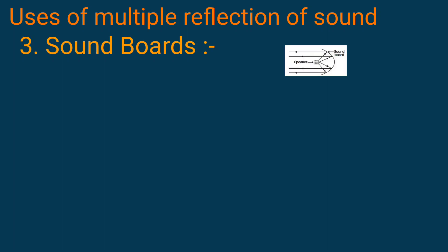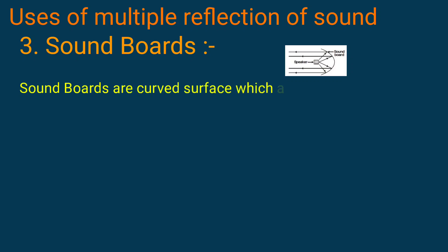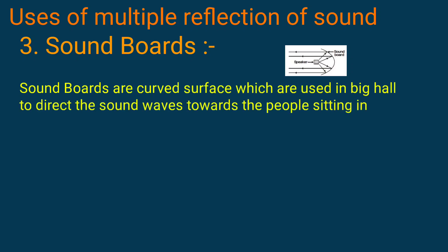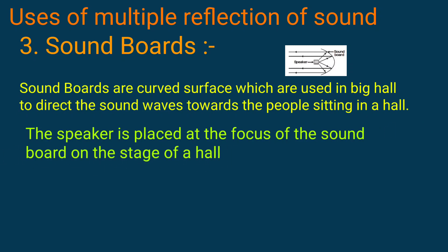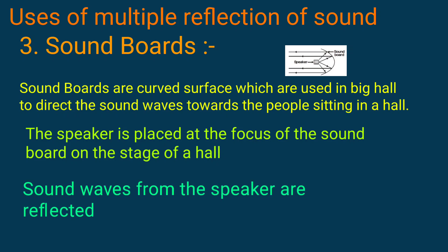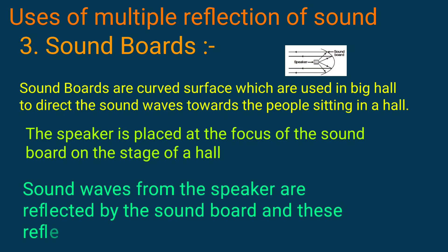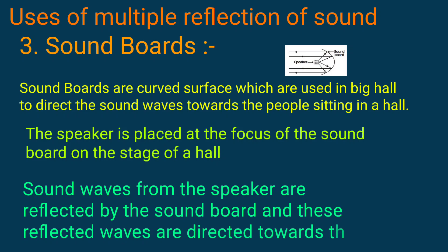Multiple reflection of sound is also used in sound boards. Sound boards are curved surfaces used in lecture halls to direct sound waves toward the people sitting in the hall. The speaker is placed at the focus of the sound board on the stage, and the reflected waves are directed toward the audience.